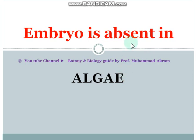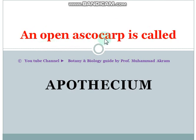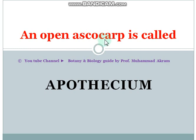Embryo is absent in algae. An open ascocarp is called an apothecium. An ascocarp is a fruiting body in which asci and ascospores are found. These are found in Ascomycotina.